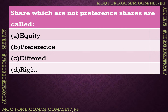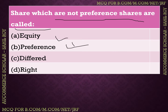The next question: Shares which are not preference shares are called what? Shares are divided into two parts: equity shares and preference shares. Shares that have no preference are equity shares. The answer is option A: equity shares.